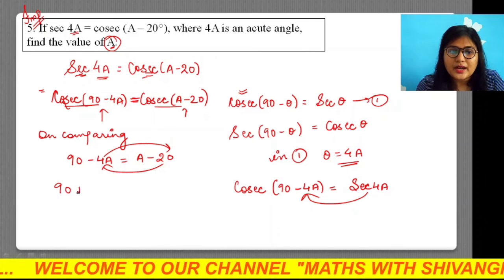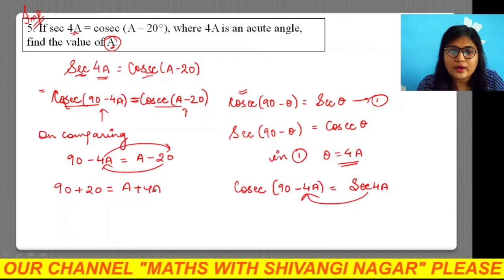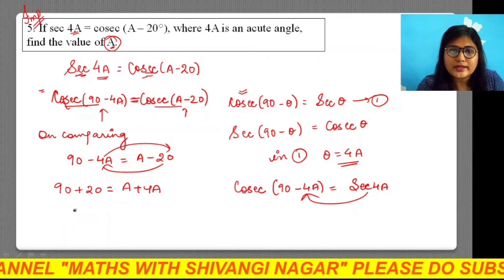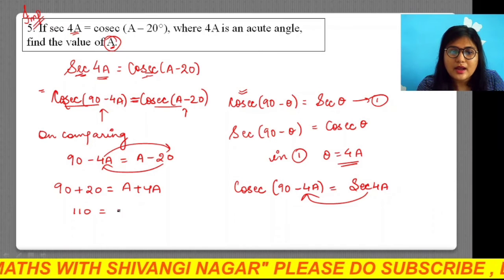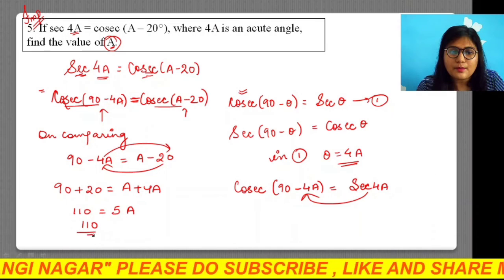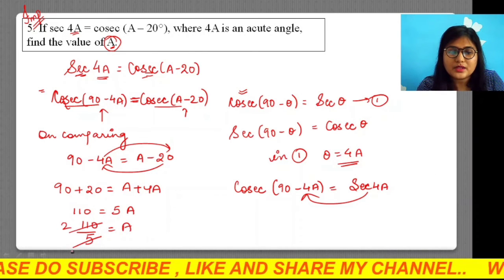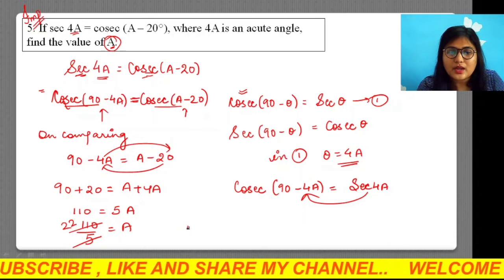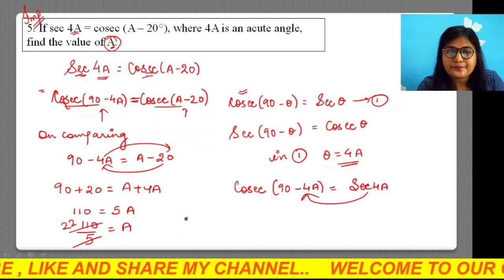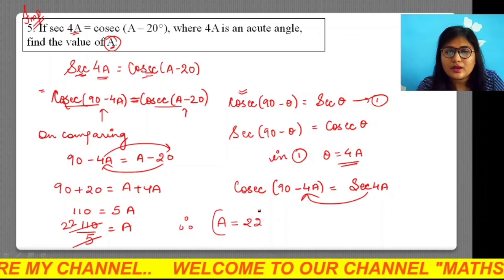90 plus 20 is 110, and this is equals to 5A. So 110 upon 5 is equals to A. Cancel, 5 goes 2 times in 10, so A is 22°.